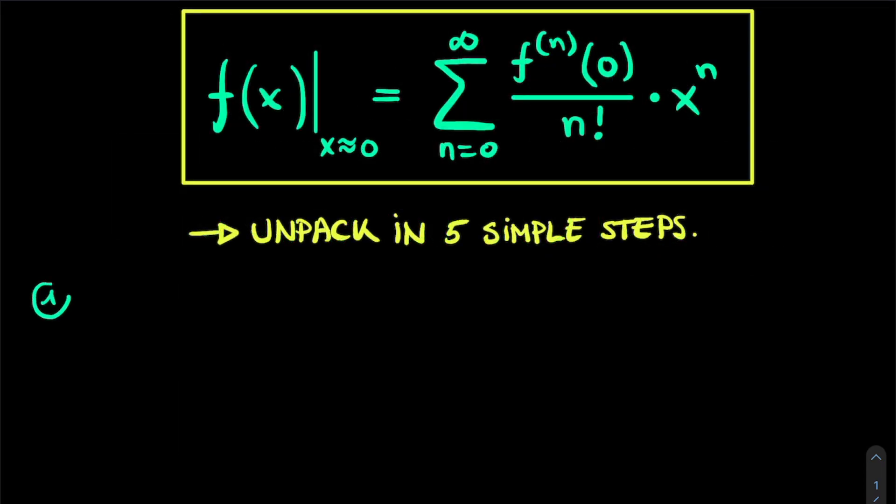In the first step we're going to focus on the left hand side of this equation, which is this f(x) with a vertical line of x approximately equal to 0. Now what does this term mean?